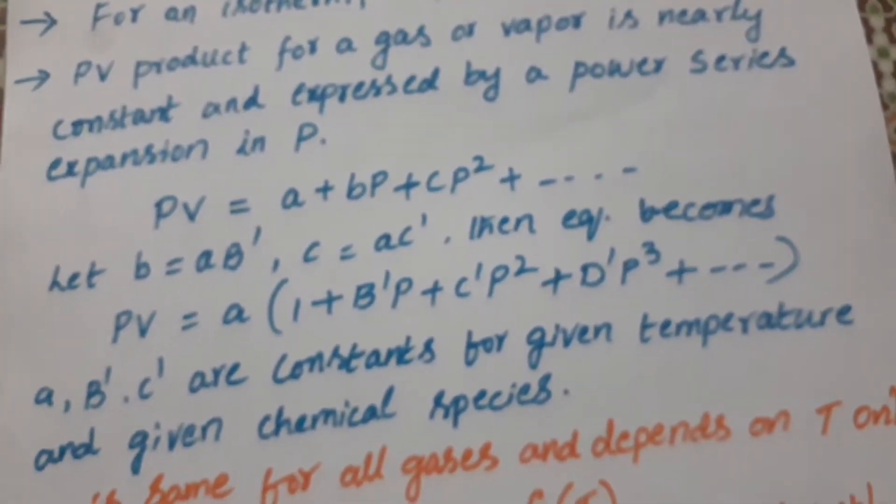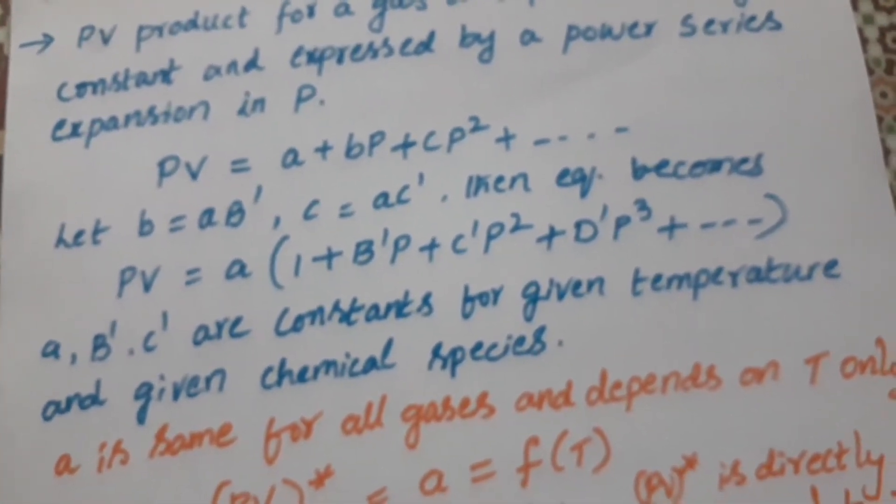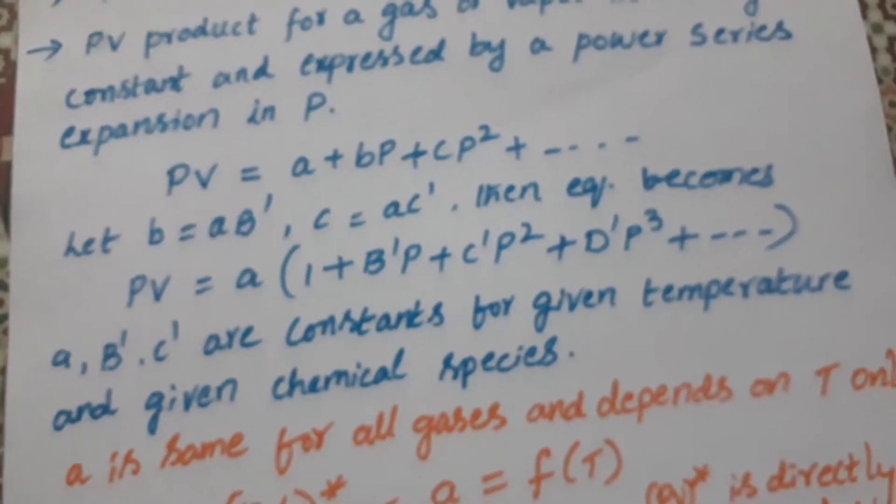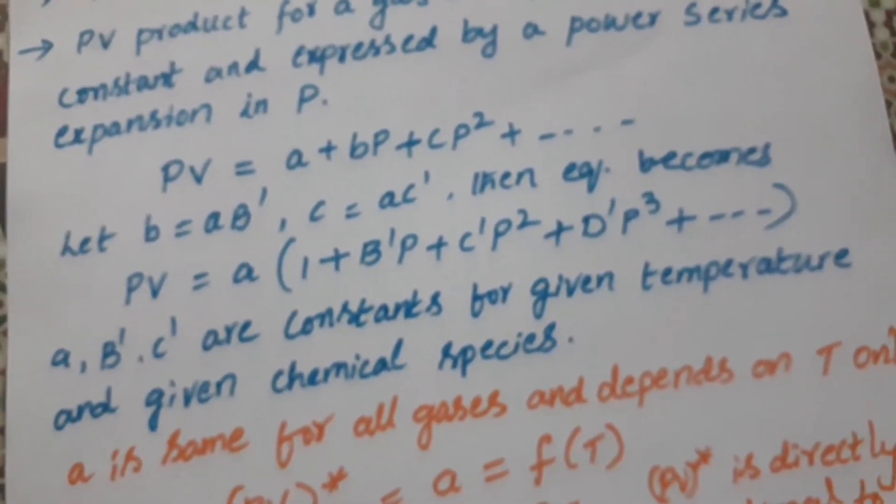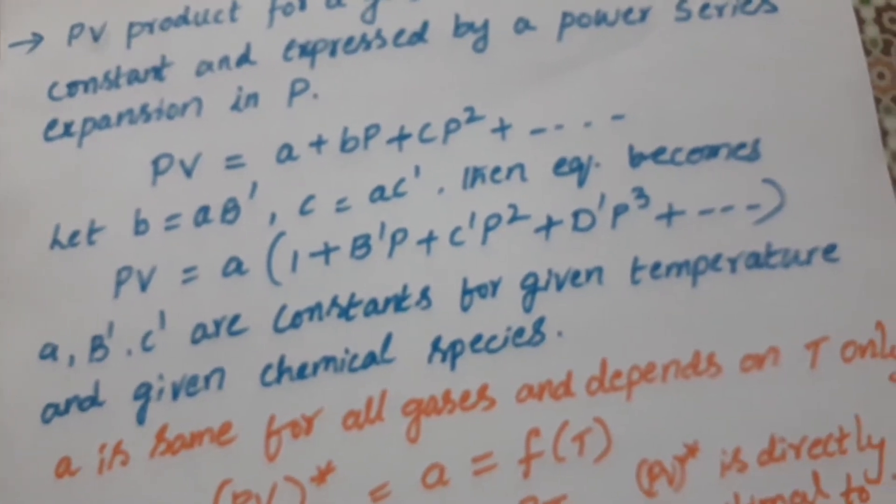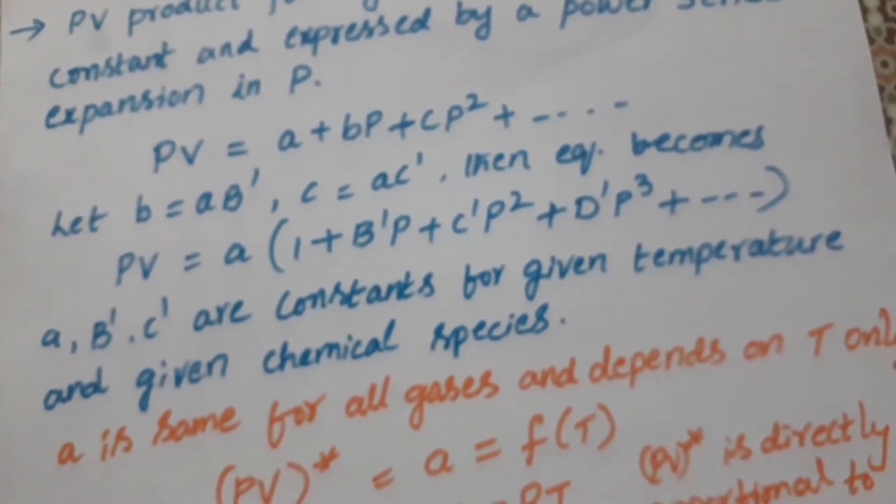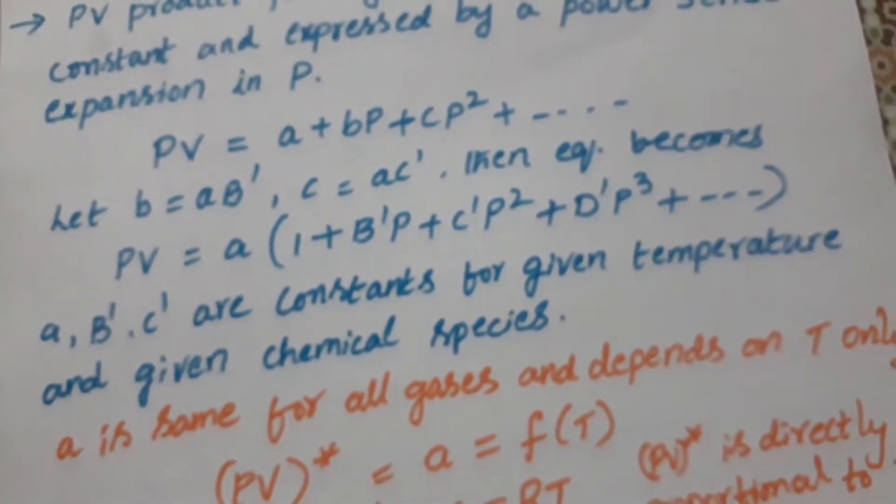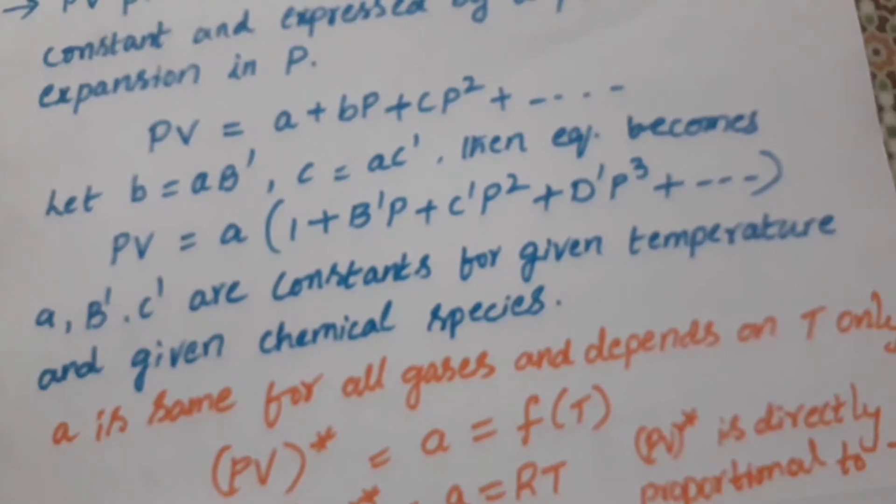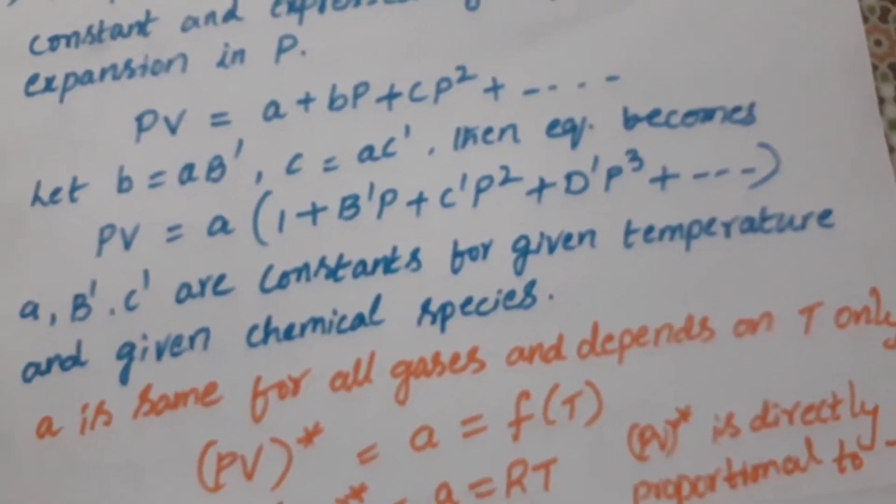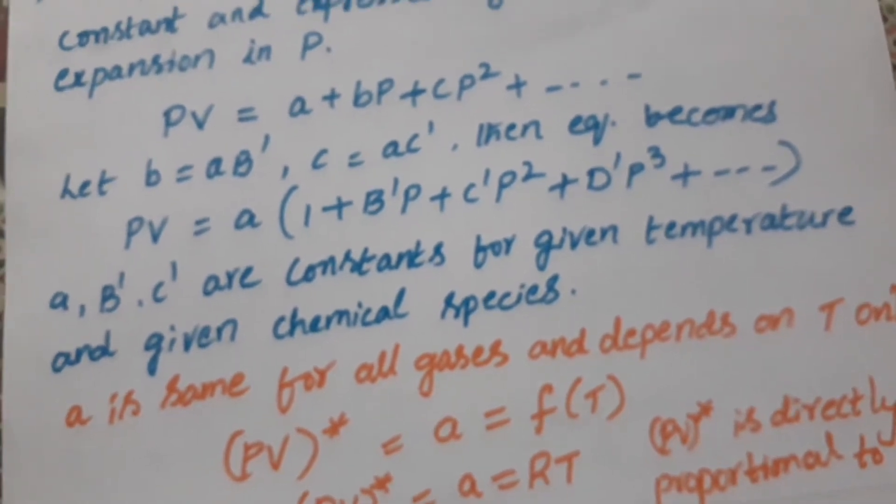So here we can see PV is equal to A plus BP plus CP² plus and so on. Let us consider B is equal to AB', C equal to AC'. Then the equation becomes PV is equal to A into (1 plus B'P plus C'P² plus D'P³ and so on). It goes in a series, that is the power expansion series.